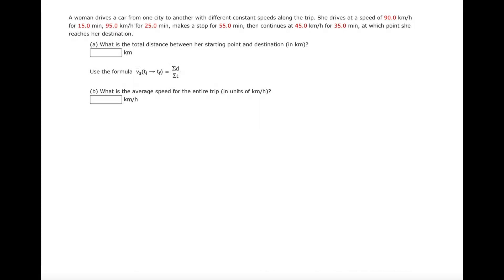A woman drives a car from one city to another with different constant speeds along the trip. She drives at a speed of 90 kilometers per hour for 15 minutes, then 95 kilometers per hour for 25 minutes. She makes a stop for 55 minutes, then continues at 45 kilometers per hour for 35 minutes, at which point she reaches her destination.